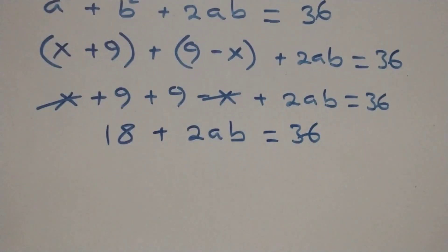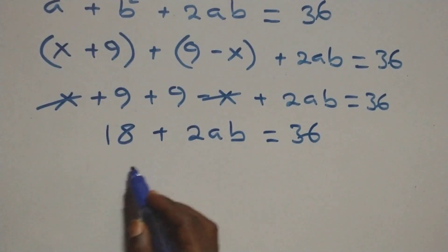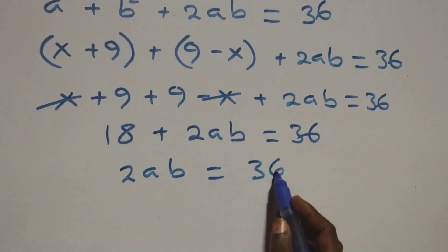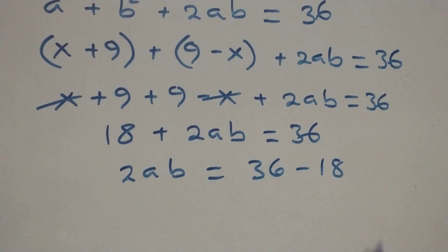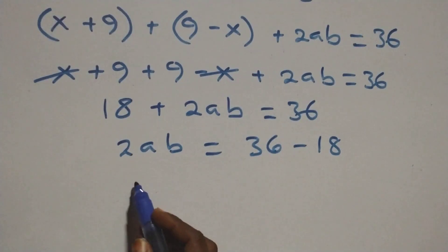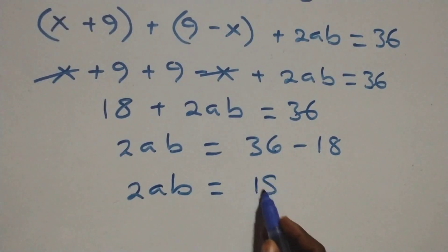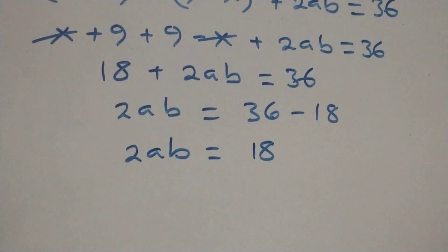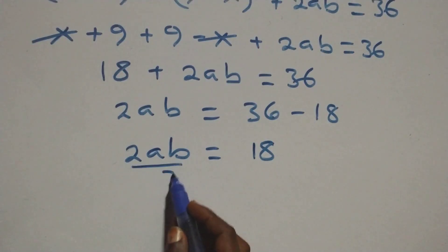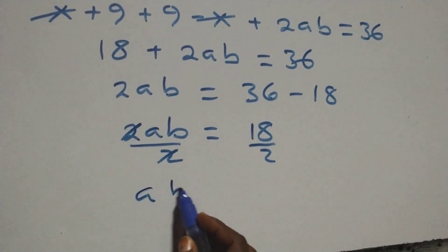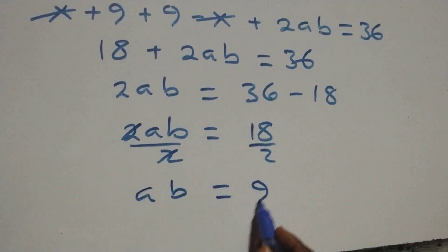We take 18 to the other side: two ab equals 36 minus 18, so two ab equals 18. Dividing both sides by two, the two cancels and we have ab equals 9.